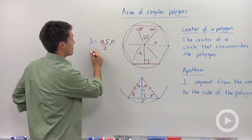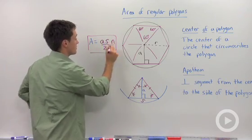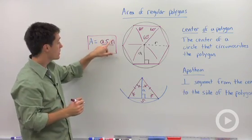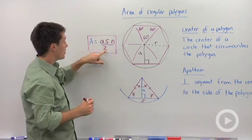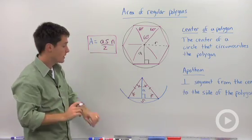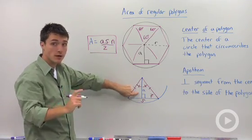So the area formula is going to be the apothem times the side length times the number of sides, all divided by two. And what you're doing here is you're calculating the area of one of these triangles and then multiplying it by however many triangles you have.